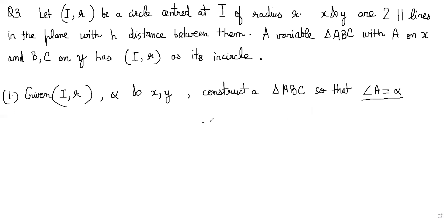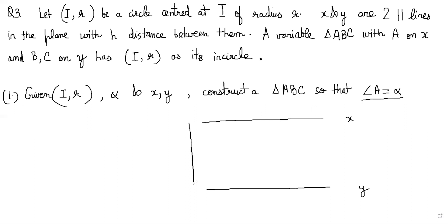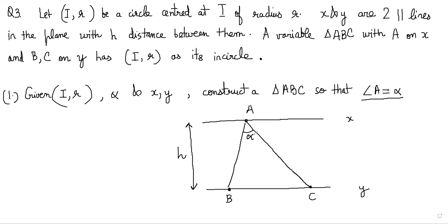Let's look at how we will do this. Let's say we have one parallel line here and one parallel line here. This is the X line and this is the Y line, and the distance between them is H. We have to put A on X and B and C on Y, and construct a triangle such that angle A is alpha.